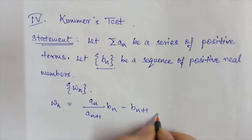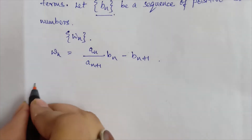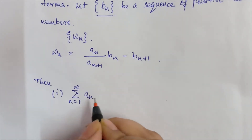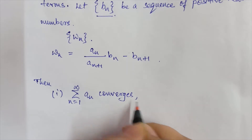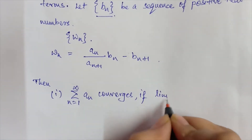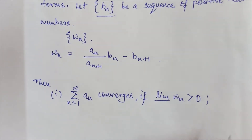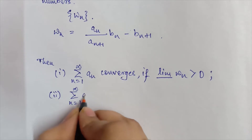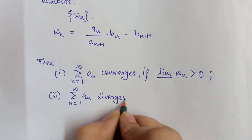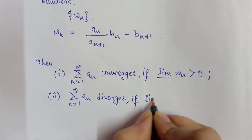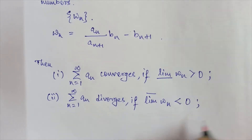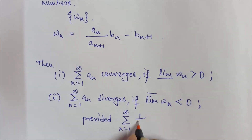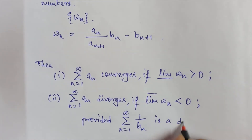The conditions are: first, the series a_n converges if the lower limit of W_n is greater than 0. Second, the series a_n diverges if the upper limit of W_n is less than 0, provided that the series 1/b_n is a divergent series.